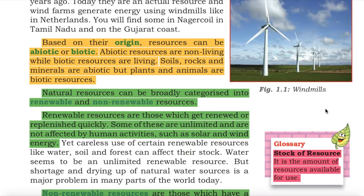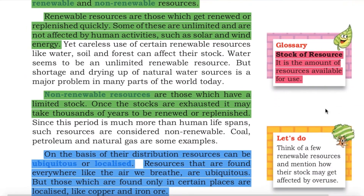Natural resources can be broadly categorized into renewable and non-renewable resources. Renewable resources are those which get renewed or replenished quickly. Some of these are unlimited and are not affected by human activities, such as solar and wind energy. Yet careless use of certain renewable resources like water, soil and forest can affect their stock.